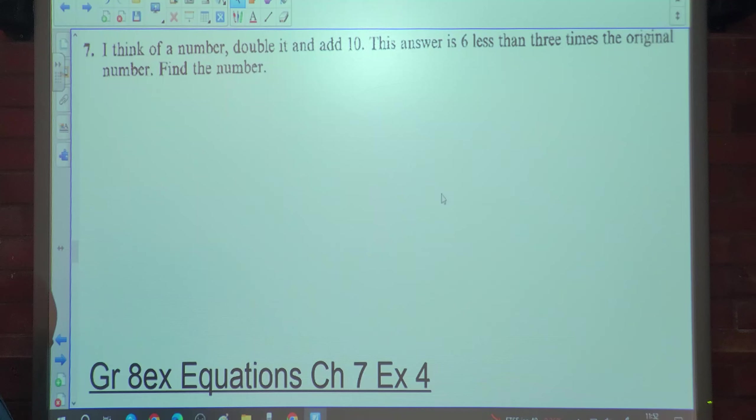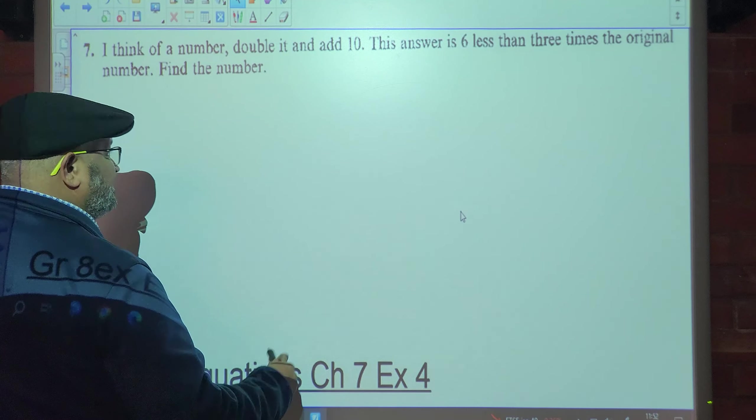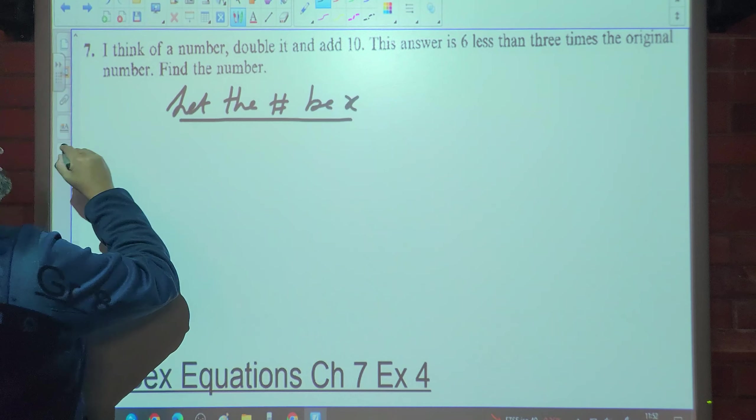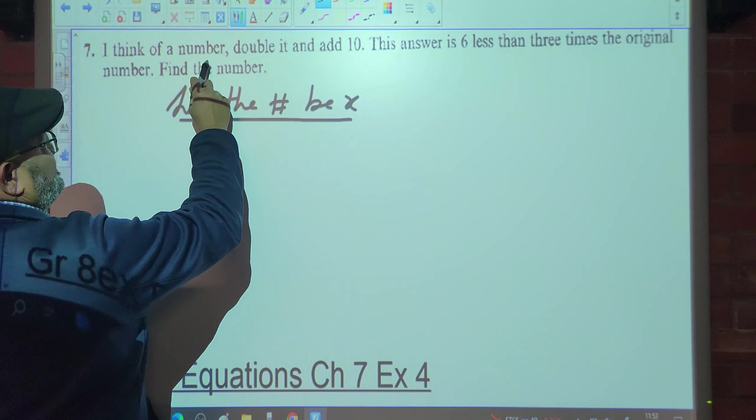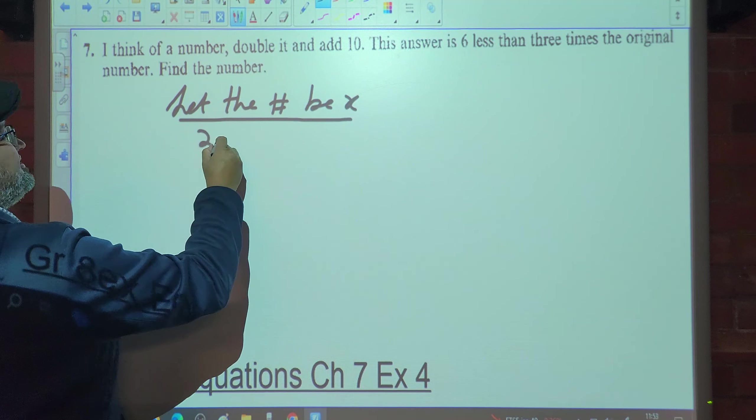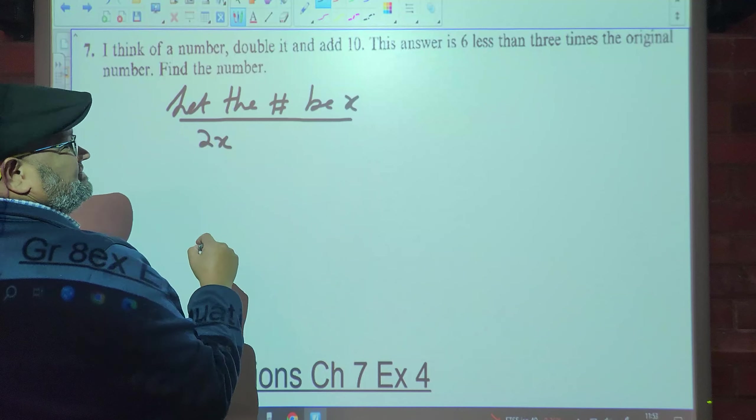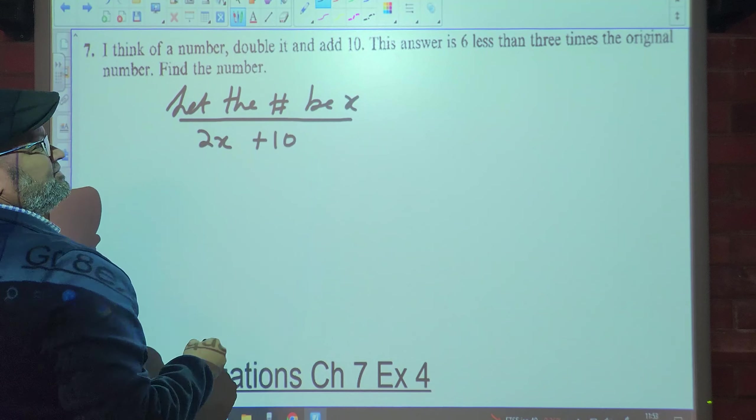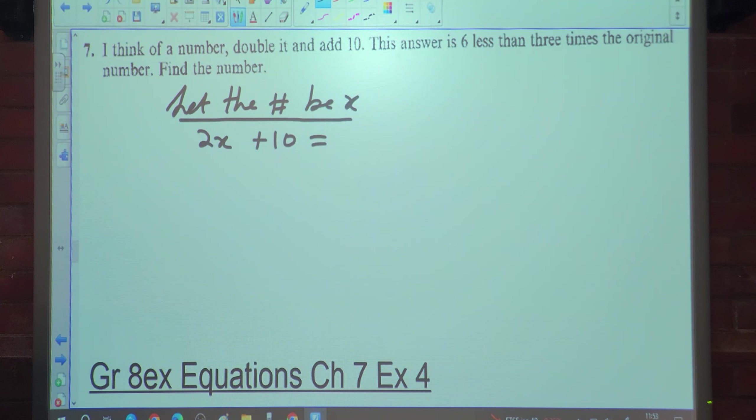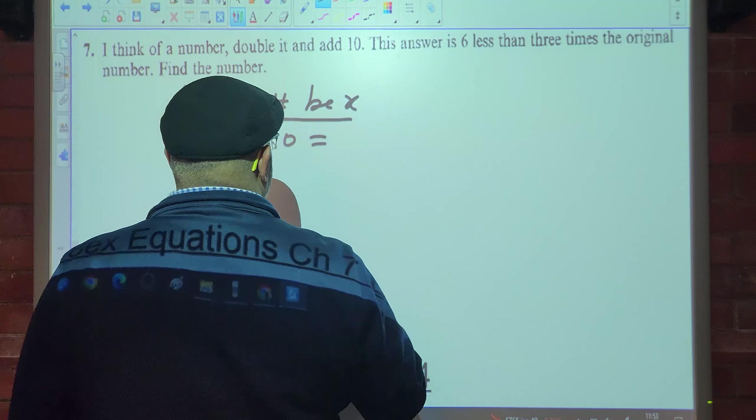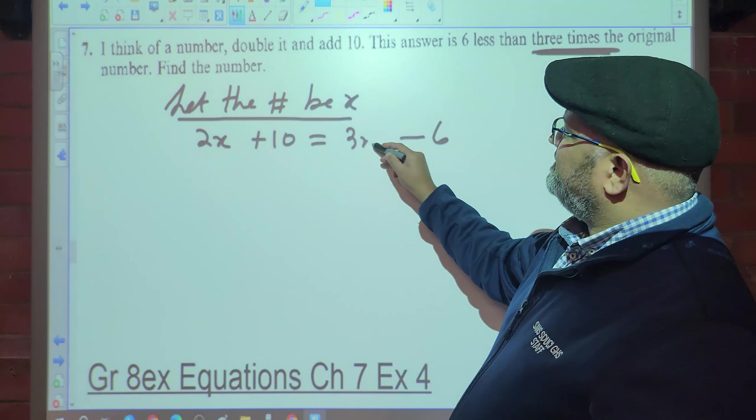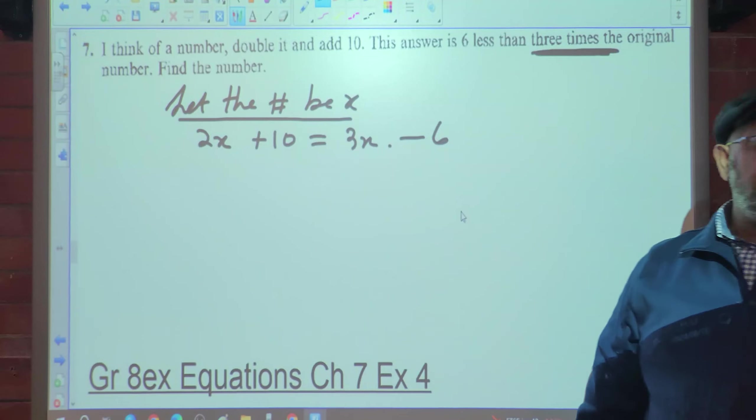Let's go to number 7. Number 7 says I think of a number. So what do I do? Let the number be x. I think of a number, double it. What would that be? 2x and add 10, plus 10. The answer is equal to 6 less than 3 times the original number. 6 less than 3 times the original number, so it's going to be 3x minus 6. Find the number, easy no?